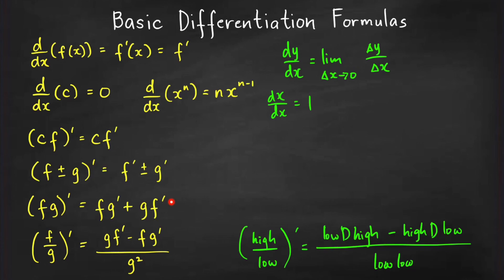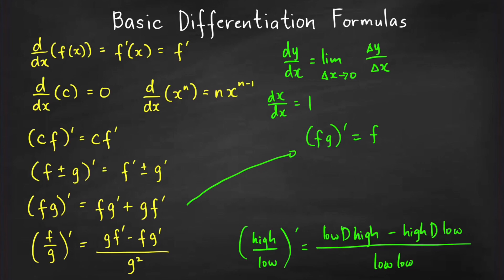Another way to remember the product and quotient rules: the derivative of a product of two functions equals the sum of two terms, taking the derivative of one factor at a time. You can extend this to a product of three or more functions. For three functions f, g, h, the derivative is f prime·g·h plus f·g prime·h plus f·g·h prime — always taking the derivative of just one factor at a time.